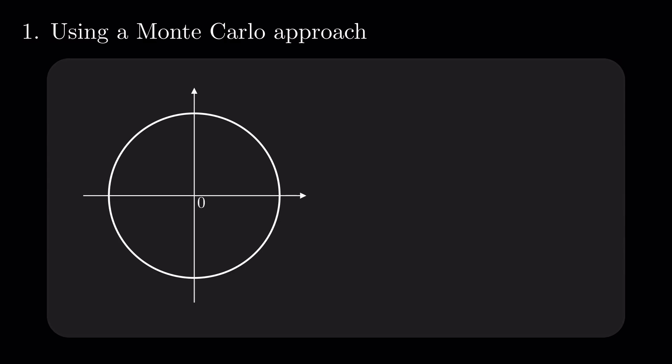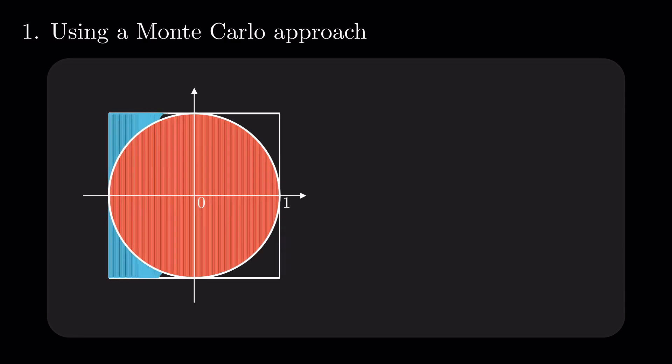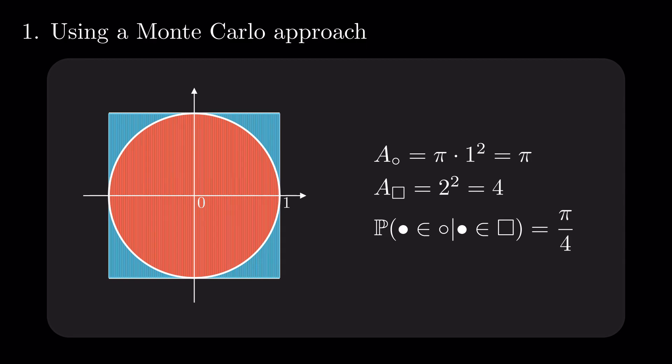Draw the unit circle and circumscribe it in the square determined by the points (1,1), (-1,1), (-1,-1), and (1,-1). The area of the circle, given the radius of 1, is pi, and the size of the square is 4. For simulated uniform points inside the square, the probability that they are also in the circle is pi divided by 4.